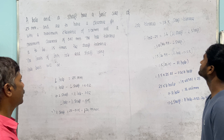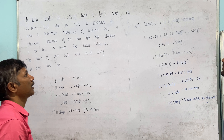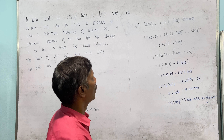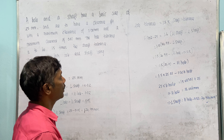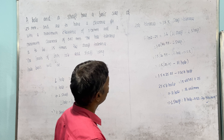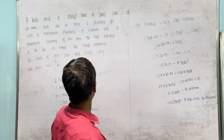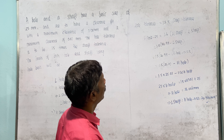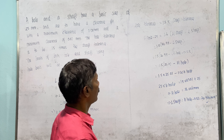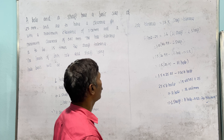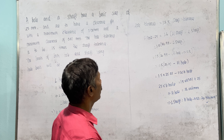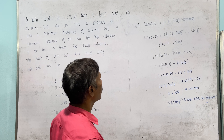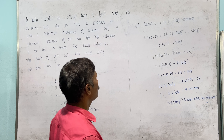Now, what is the upper limit of the shaft? What is the hole tolerance? The hole tolerance is 1.5 times the shaft tolerance. Substituting: upper limit of hole minus 25 equals 1.5 times shaft tolerance. And lower limit of shaft equals upper limit of hole minus 0.02. Substituting these relationships together to solve.